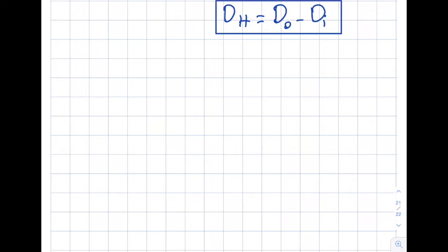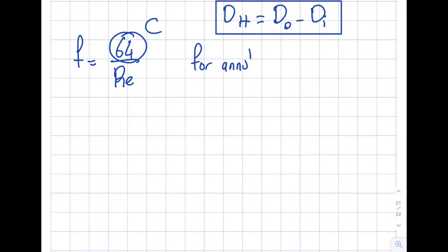Another aspect that I want to touch upon related to non-circular ducts is related to the Darcy friction factor being 64 over Reynolds, and that was actually C. And this is 64 for a circular pipe. That's what I said when I was deriving this Darcy friction factor for laminar flow. Now I'm going to revisit this and take a look, okay, for annulus.